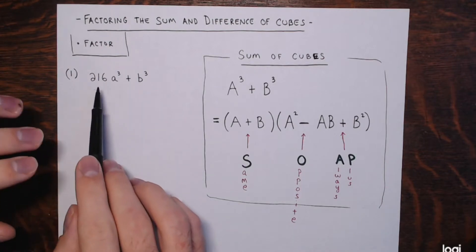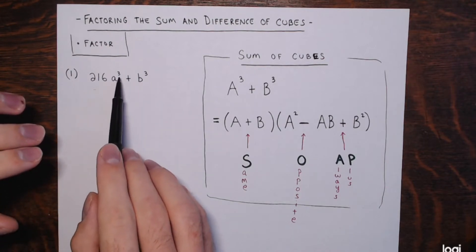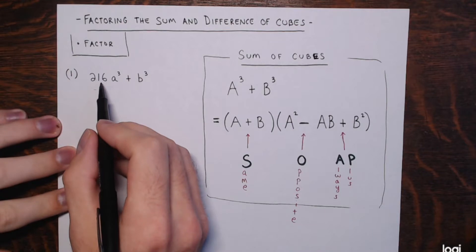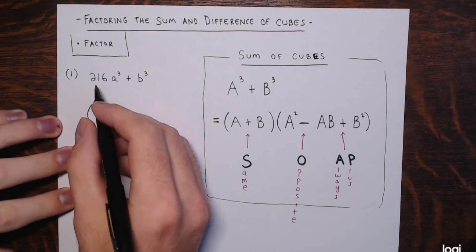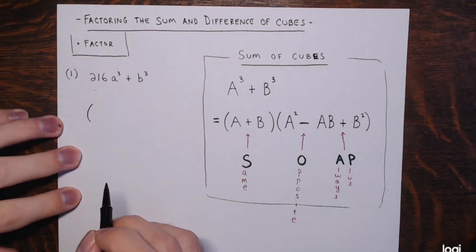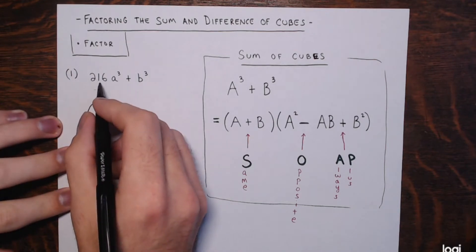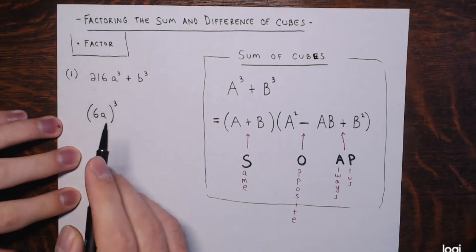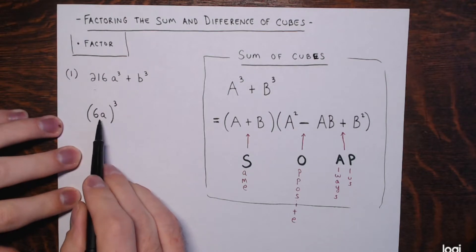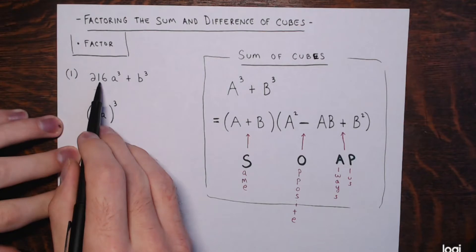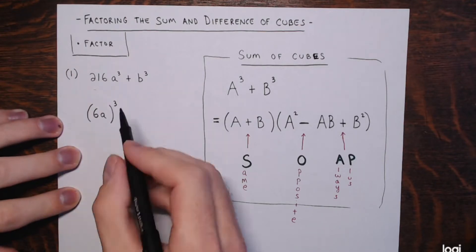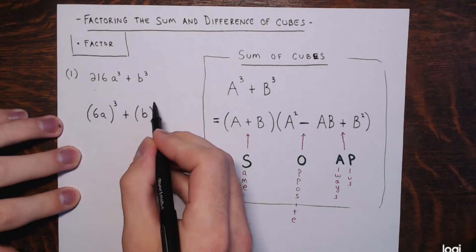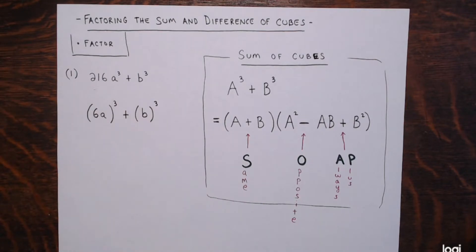So this first example: we have 216a cubed plus b cubed. The first term, 216, is a perfect cube — 216 is 6 cubed, since 6 times 6 times 6 is 216. So 216a cubed is 6a to the third power. Then we have plus b cubed, which is b to the third power — it's already a perfect cube.